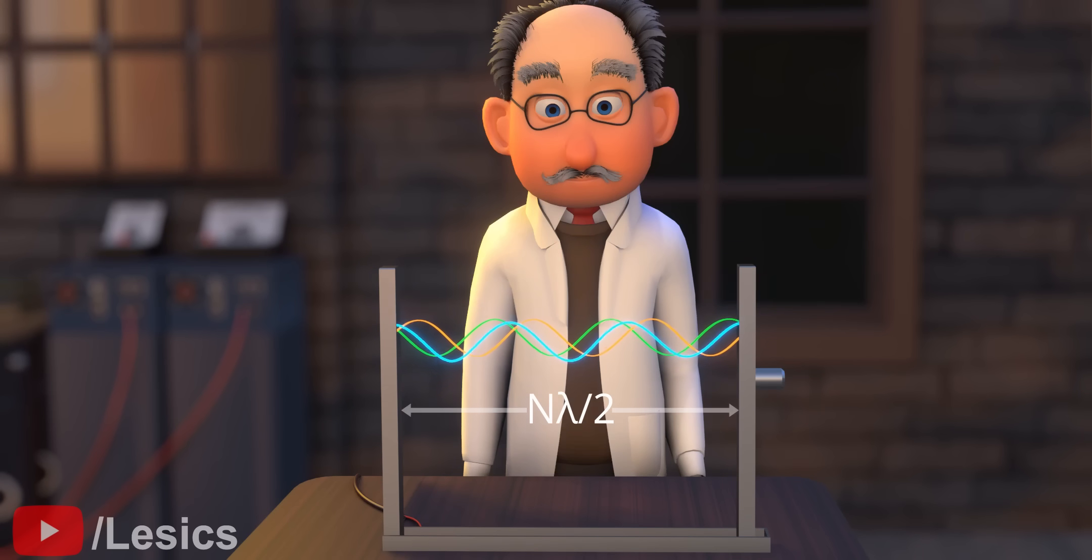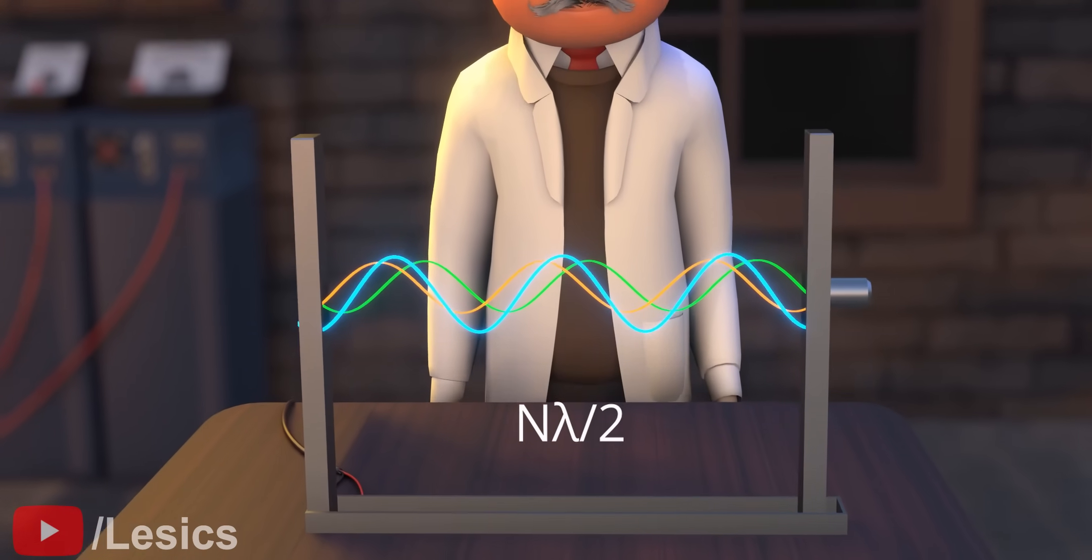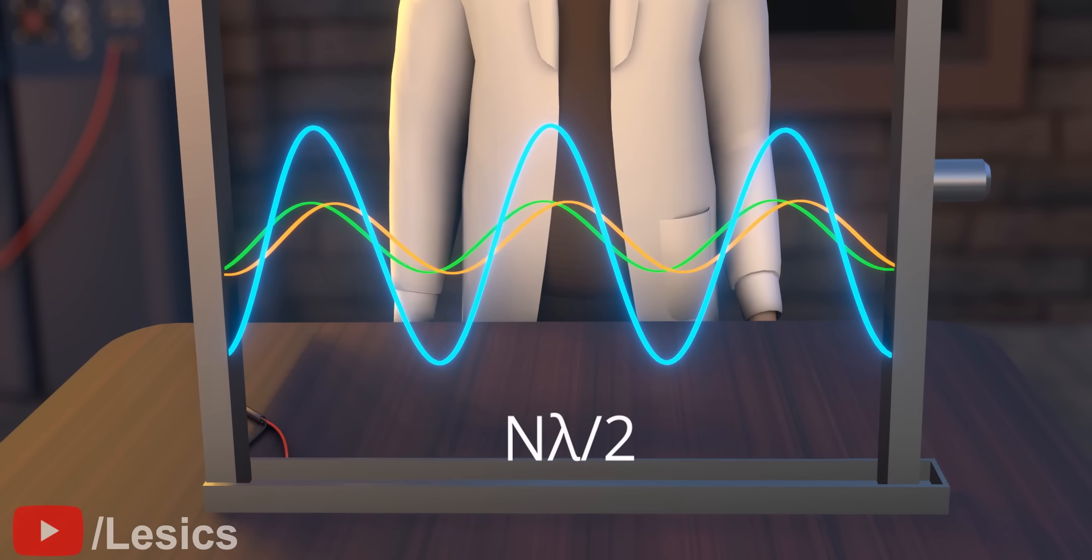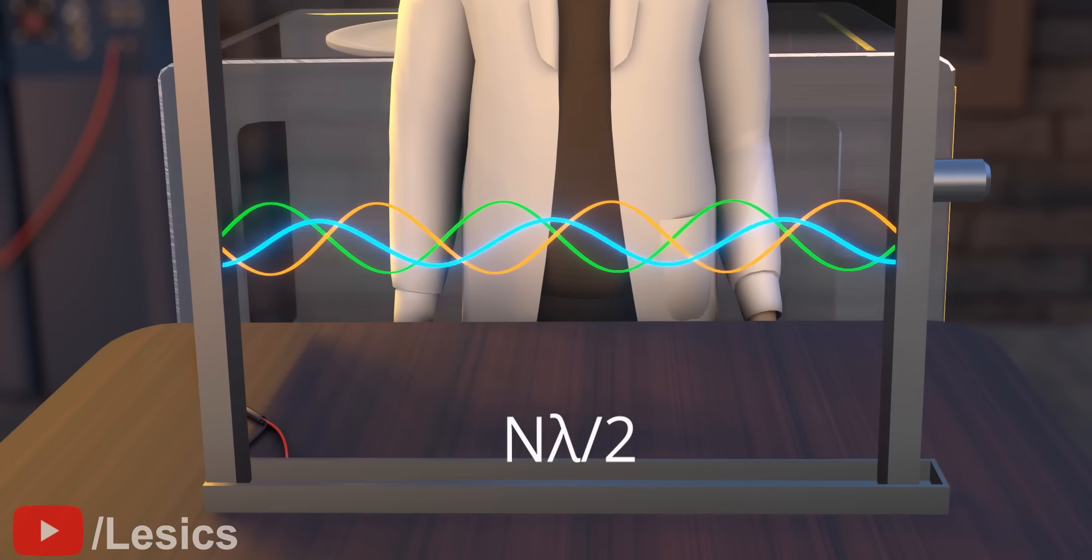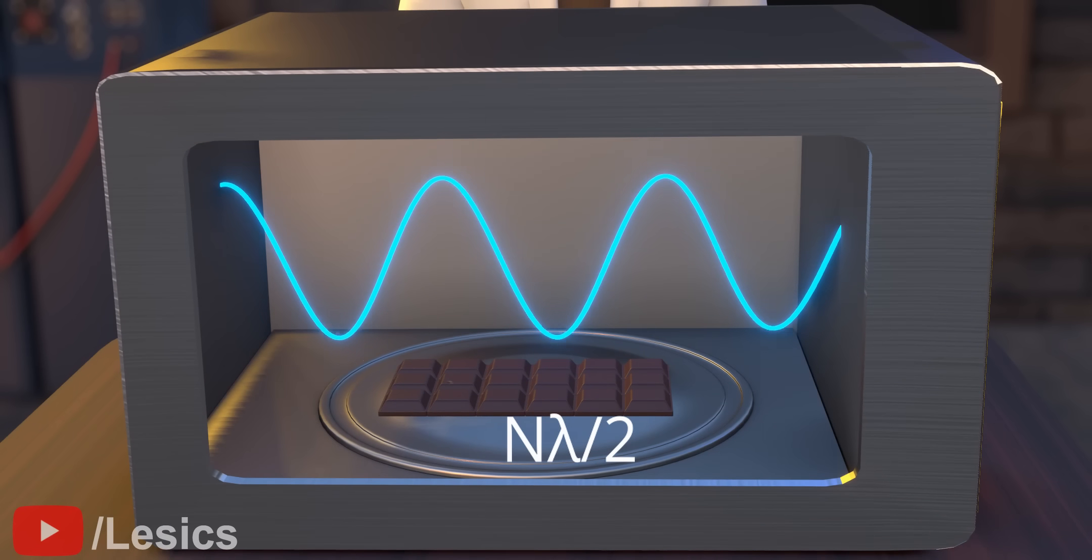Thus, the dimensions of the closed structure are determined by the wavelength of these waves. Now, a fun fact. Just measure the cavity length of the microwave oven in your kitchen. It will be an integer multiple of this wavelength.